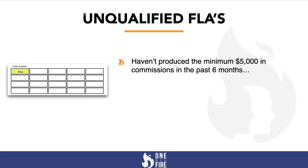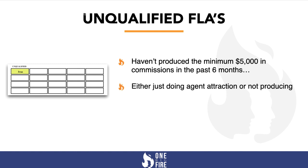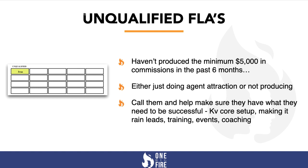In this area, you track your unqualified agents — those who haven't produced the minimum $5,000 in commissions in the past six months, either because they're focused on agent attraction or they're not producing. Reach out to them, call them, and help make sure they have what they need to be successful. Always ensure they're leveraging tools like KV Core, the making it rain training, additional training events, and access to coaching.